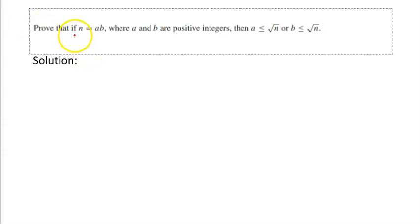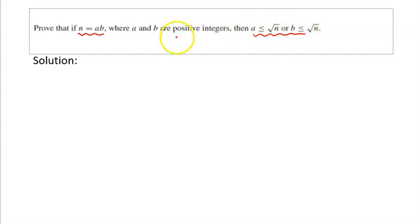The first problem I am going to discuss today: if n equals ab where a and b are positive integers, then a is less than or equal to the square root of n, or b is less than or equal to the square root of n. I suggest you pause the video and try to write a direct proof of it. If you are not able to, it will help you understand why proof by contraposition can come to our rescue in those kinds of situations.